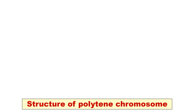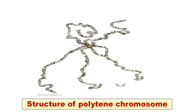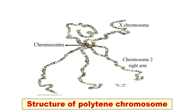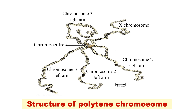Regarding the structure of polytene chromosomes, a polytene chromosome has five long arms and one short arm. There is a part called the chromocenter, which is formed by the fusion of centromeres of all the chromosomes. The arms include chromosome 1, which is the X chromosome and is the longest arm, chromosome 2 right arm and left arm, chromosome 3 right arm and left arm, and chromosome 4 which is the shortest arm. There is also a structure called synapsis where the two homologous chromosomes separate out.